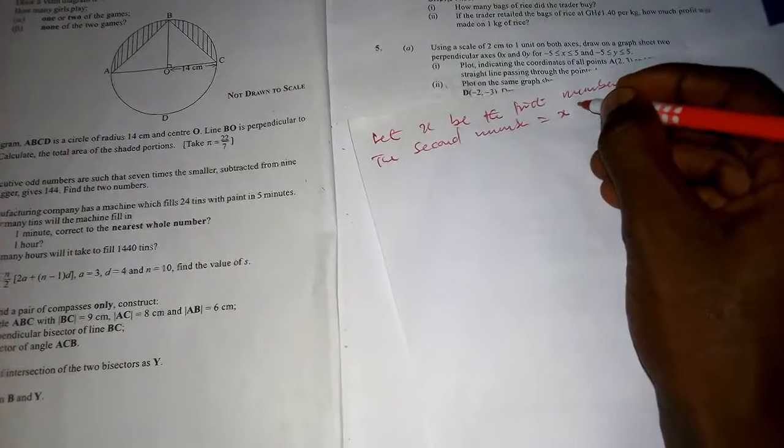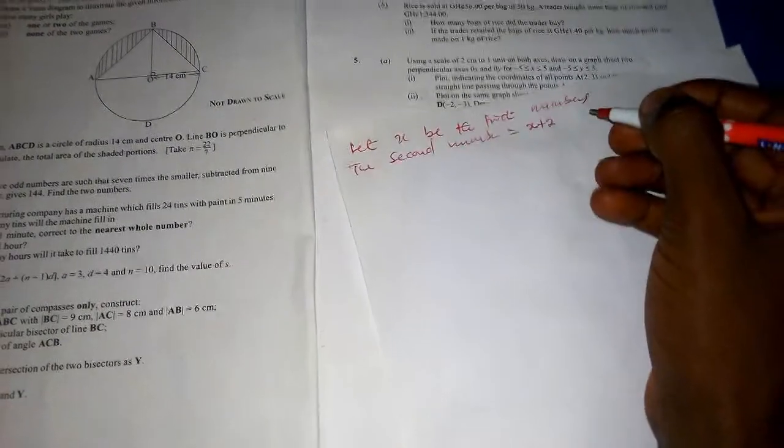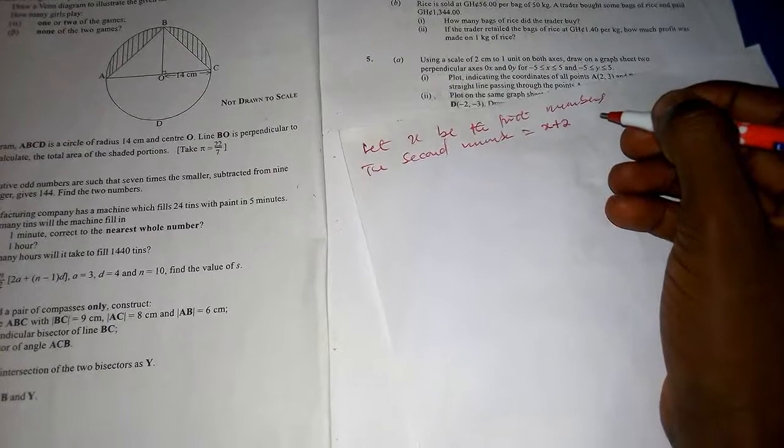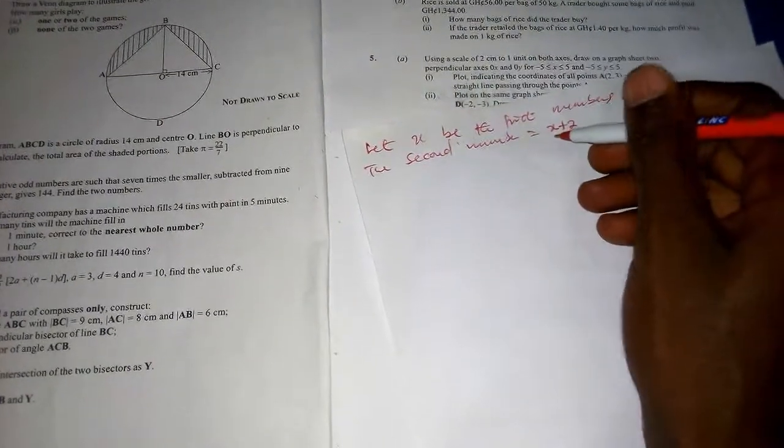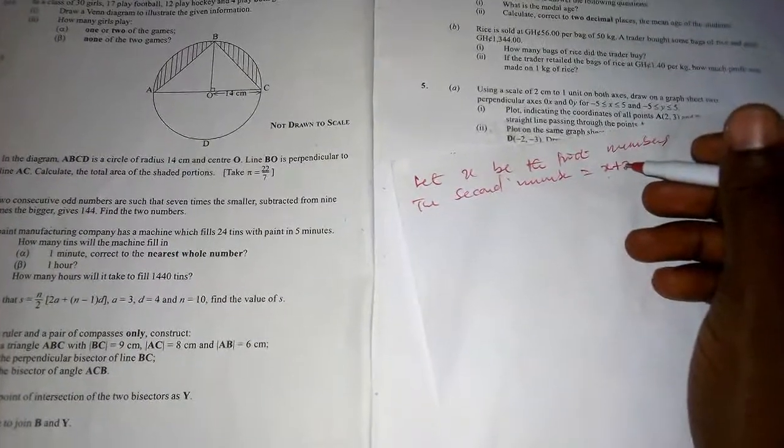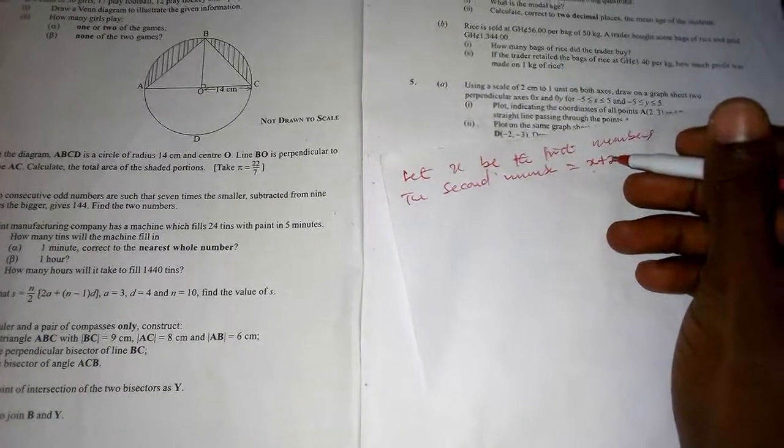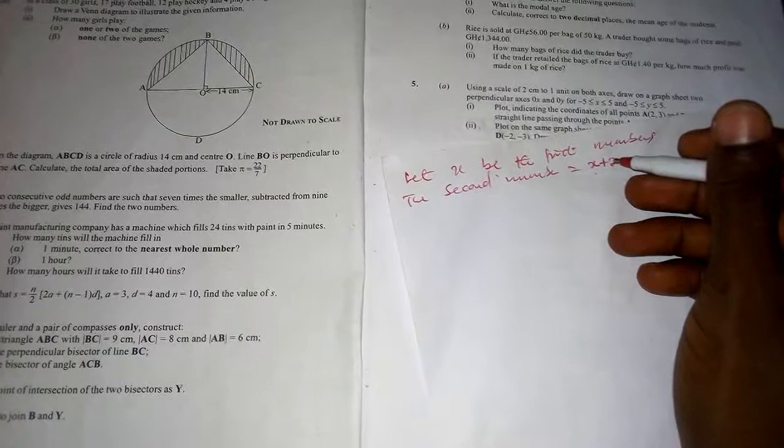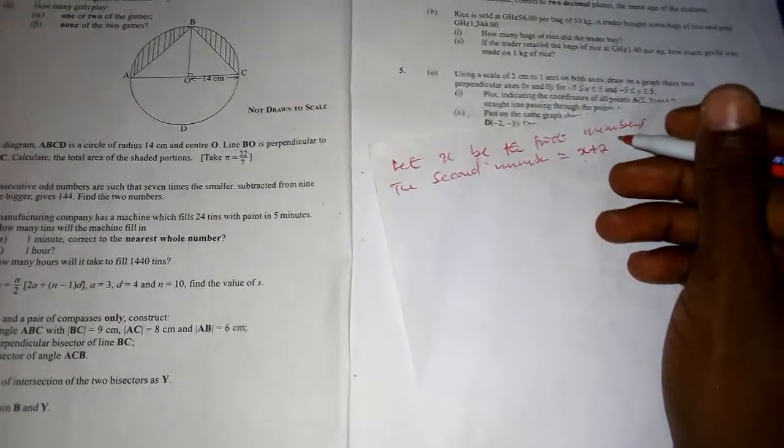So there's a smaller number and a bigger one. Now the question says seven times the smaller number subtracted from nine times the bigger gives 144. So that's the same as nine times the bigger number minus seven times the smaller number.